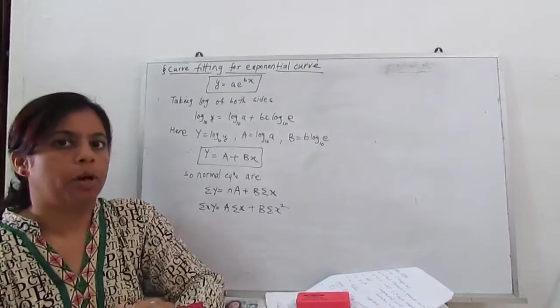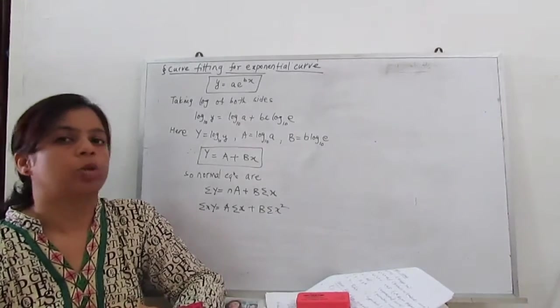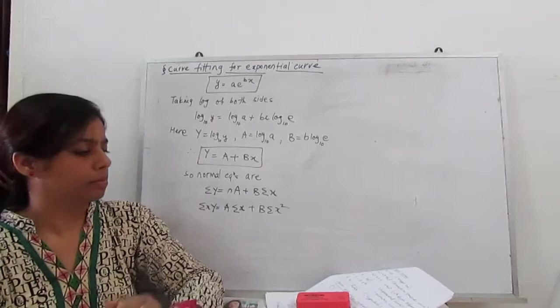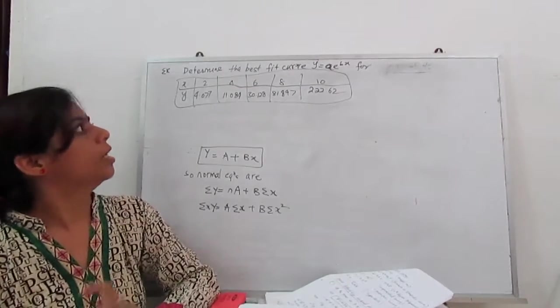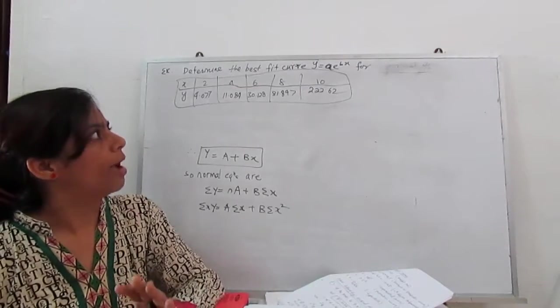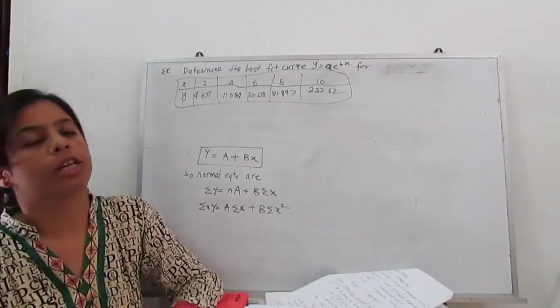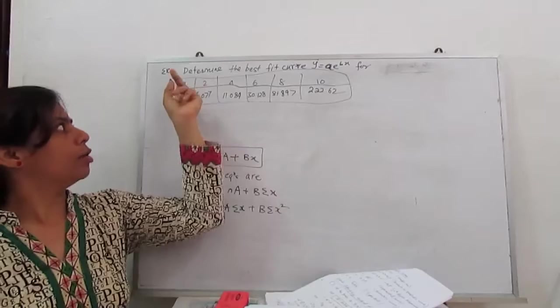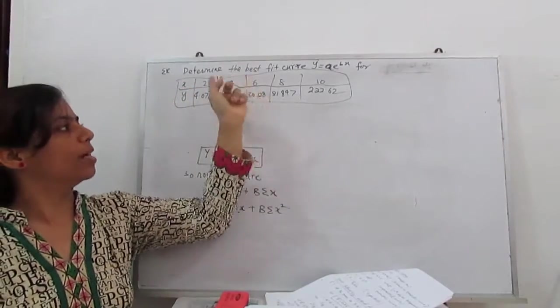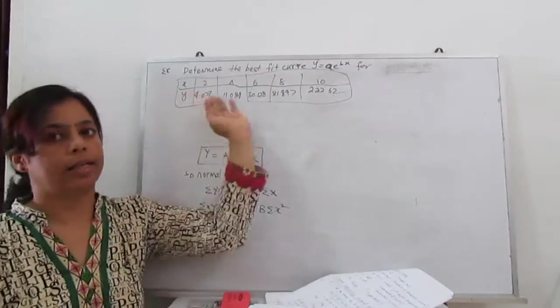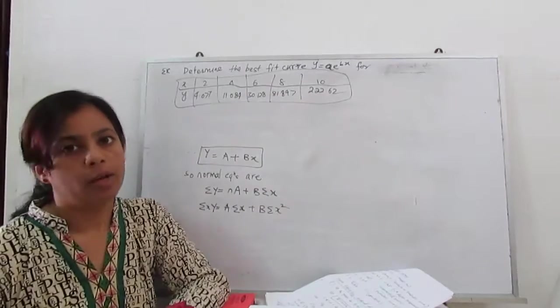So let us proceed with one example, how to solve this curve. The given question is, determine the best fit curve y equals a e to the power bx, exponential curve for the given data, set of values x and y. x is 2, 4, 6, 8 and we have some set of value of y.